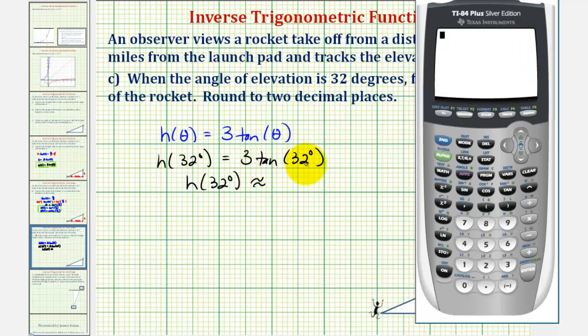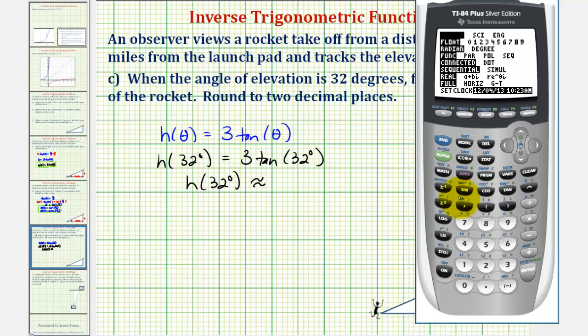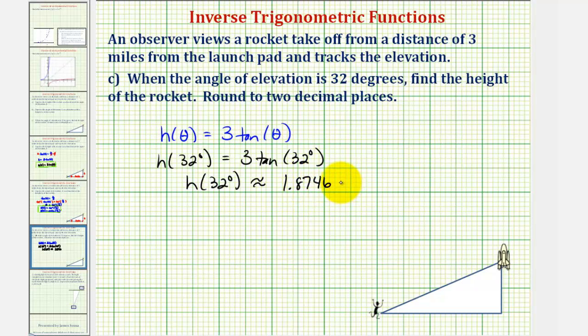First, we should make sure that we are in degree mode. We'll press the mode key, arrow down to the third row, and highlight degree. Press enter. Go back to the home screen by pressing second mode for quit. Now we'll enter three, tangent, thirty-two, close parenthesis, enter. The distance would be approximately 1.8746, and the units would be miles. I hope you found this helpful.